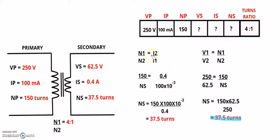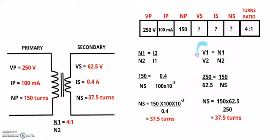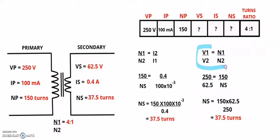In case you're wondering why you can use either the turns and current ratio or the voltage and turns ratio to calculate the secondary turns — it's because the voltage, turns, and current ratios are all equal to each other. This means you can use any compatible pair of ratios to solve for an unknown value.